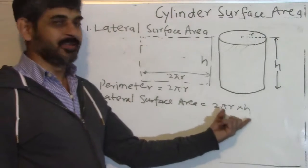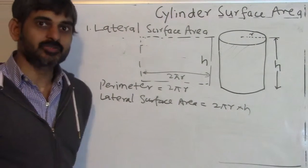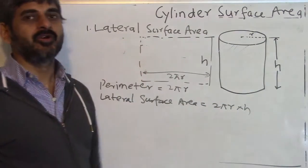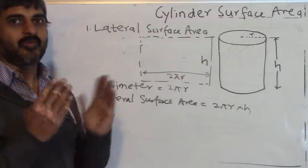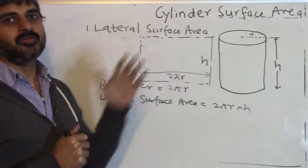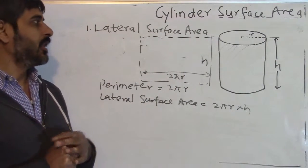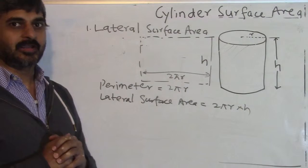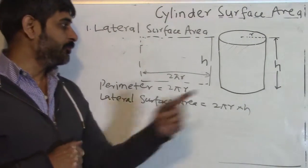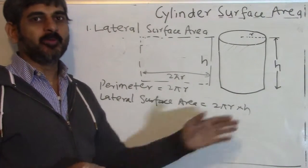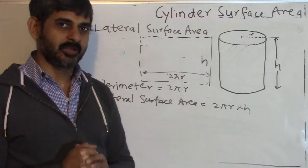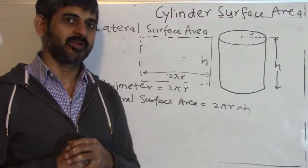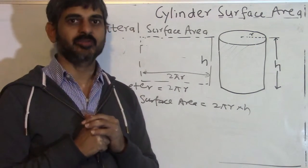You don't need to memorize this formula. Anytime you are asked this question, just mentally imagine a cylinder, think about what will happen if you open it up into a rectangle, and find out the area of that rectangle. If by doing the problem again and again you memorize it, that is a different thing — but don't try to memorize it. If you try to memorize too many things, your memory will be overloaded.